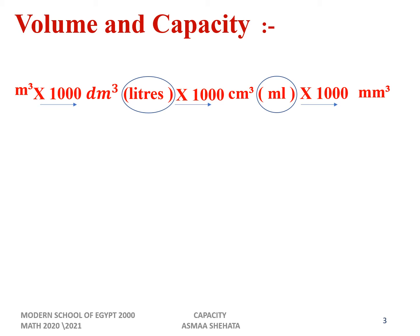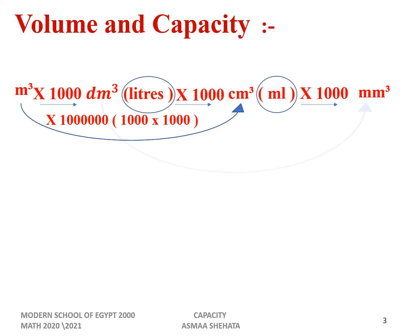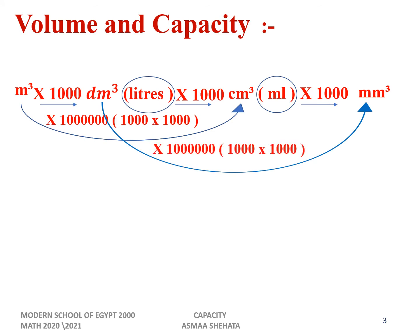When we change from a big unit to a small unit, we multiply by 1000. For example, to change from meter cube to centimeter cube: times 1000, times 1000 — that is twice, so times 1 million. Similarly, to change from liter to millimeter cube: times 1000, times 1000 — also times 1 million.